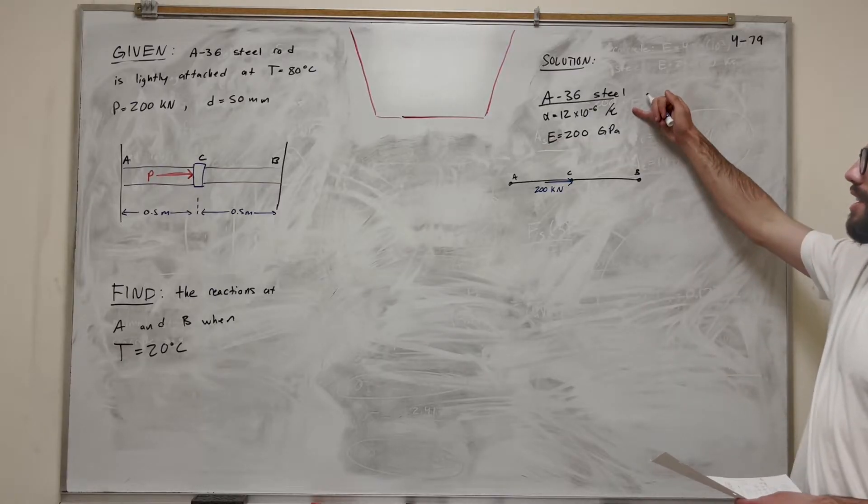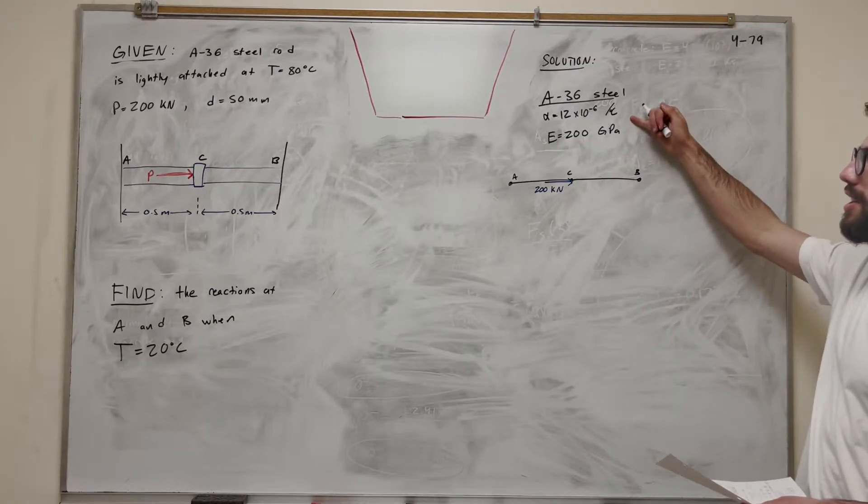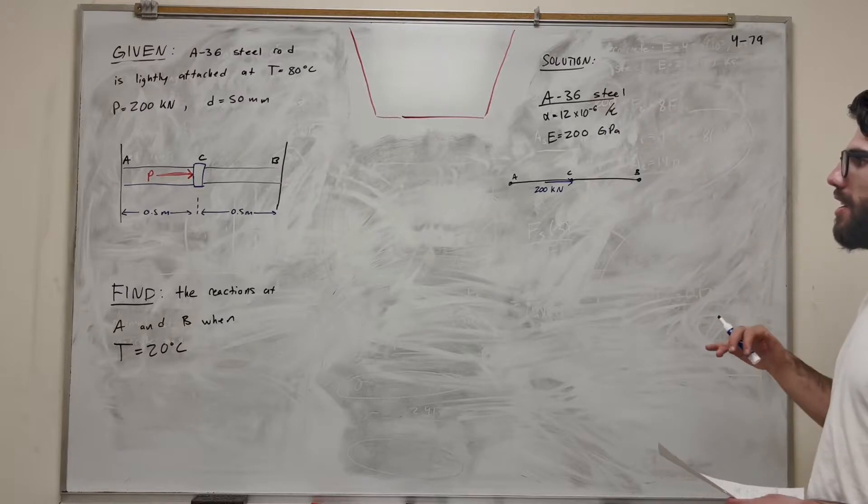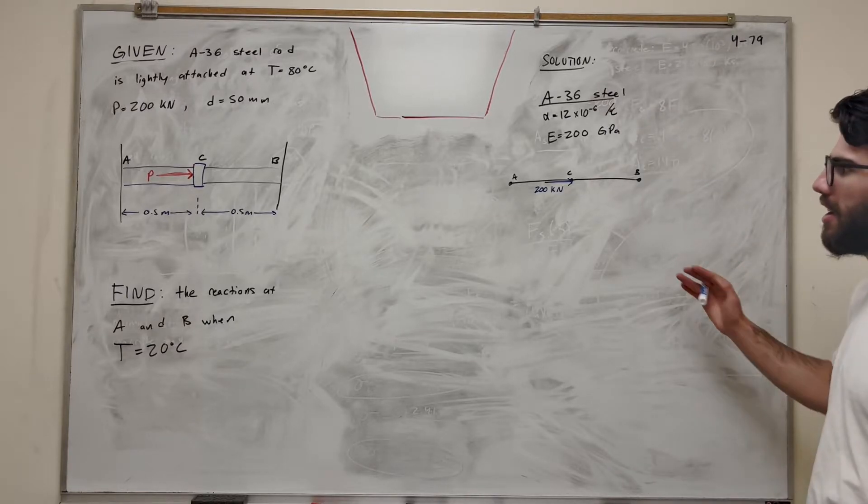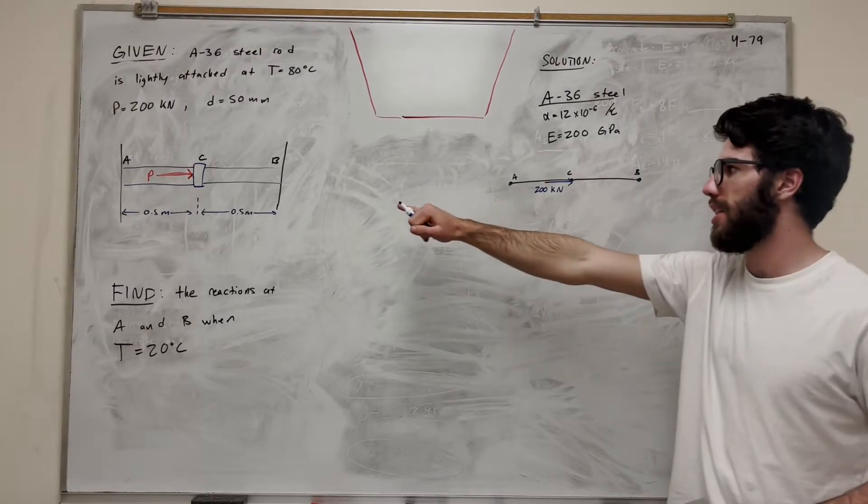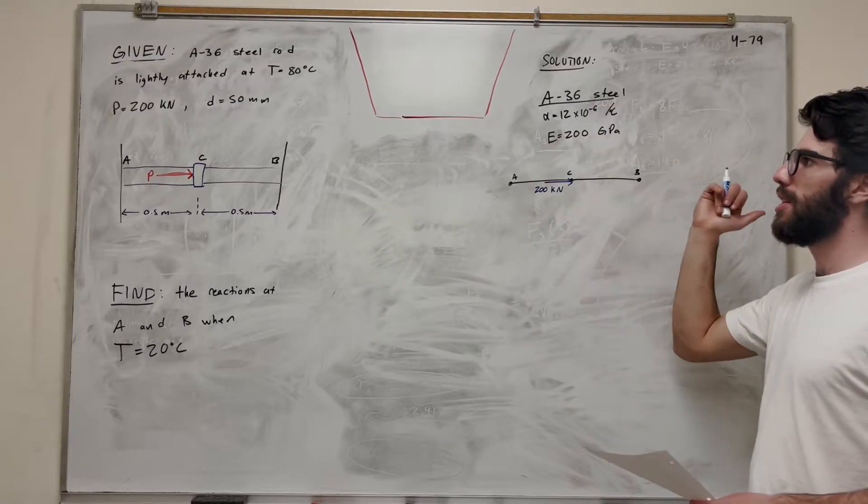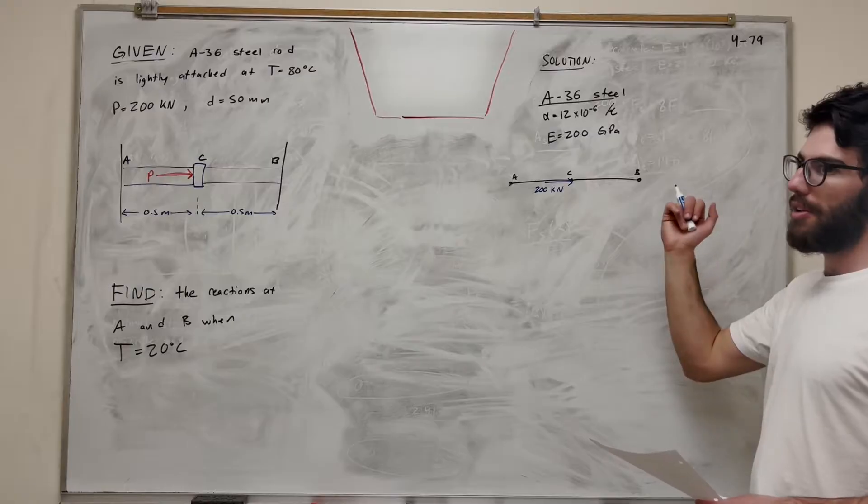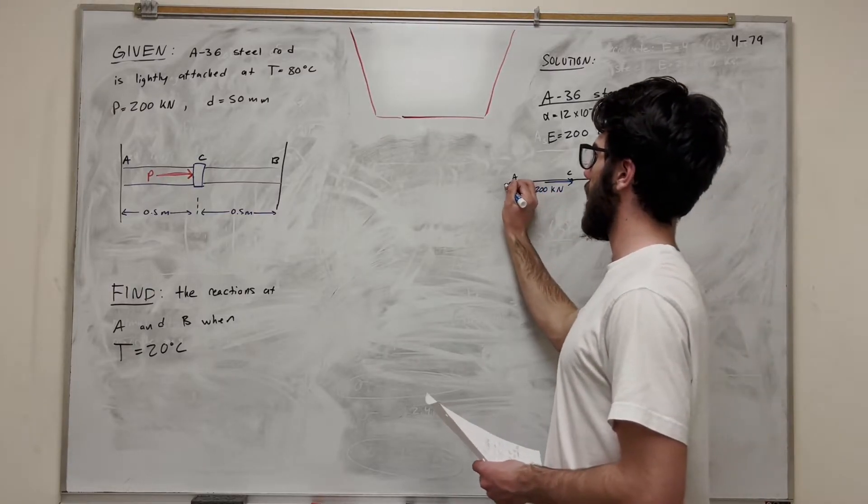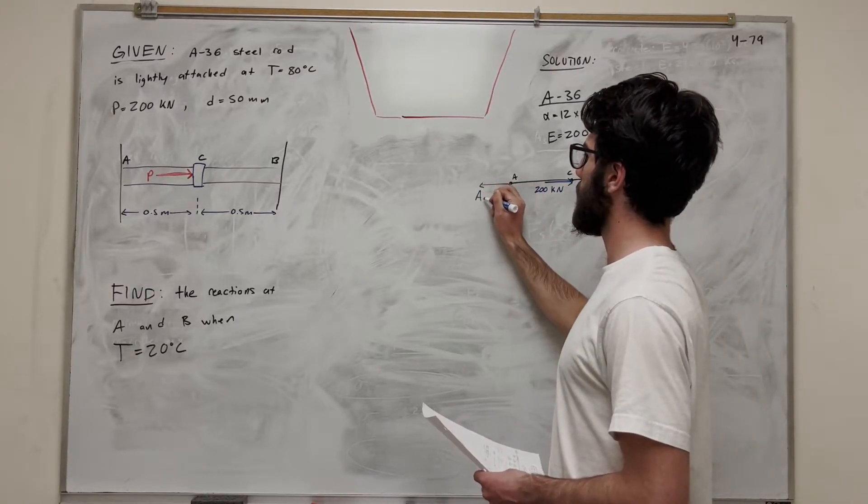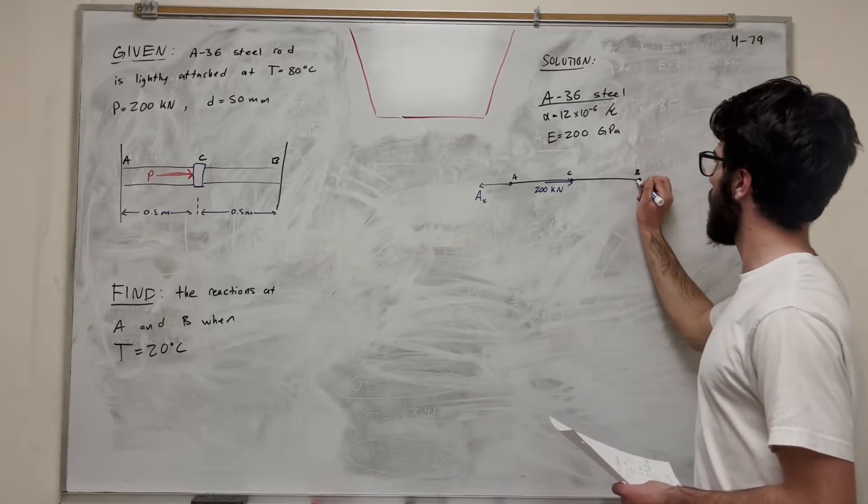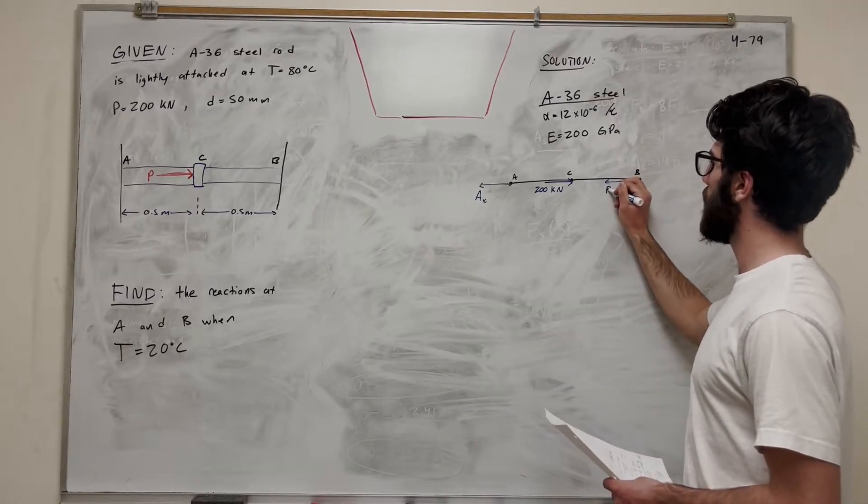So we're going to head and note the constants for A36 steel, alpha and E, and let's finish our force body diagram here. So I went ahead and started it with what we got here, 0.5 meters, of course, on each side, and we have this 200 kN force pushing this way. So to counteract that, there's going to be a force here at A, right? And it's going to push away. So let's say we'll have A_X, and then B is going to have the same thing, right? It's going to push away, B_X.